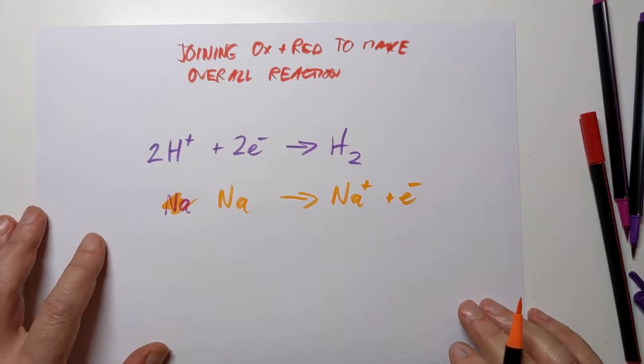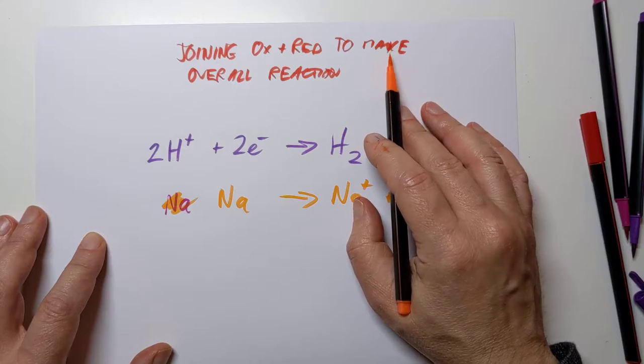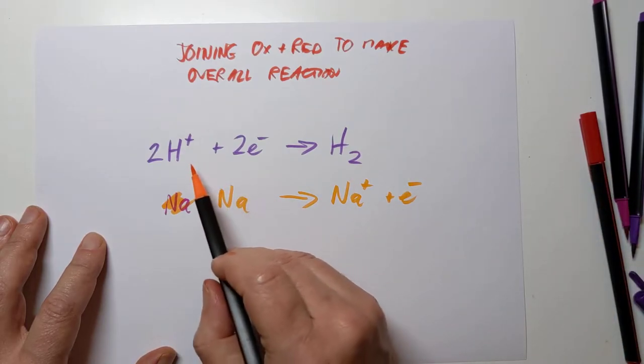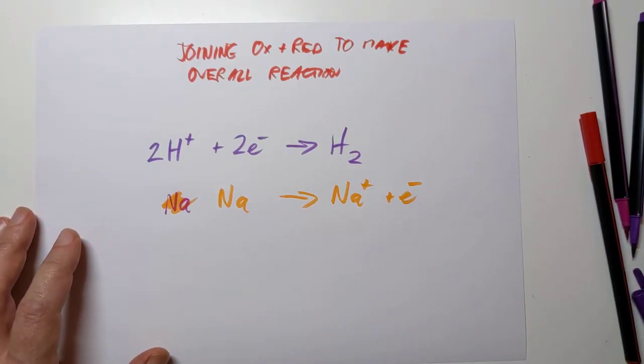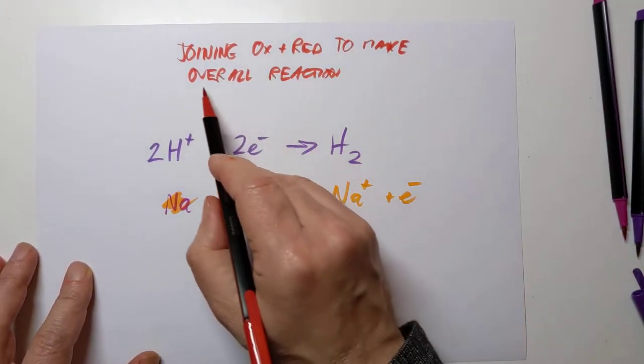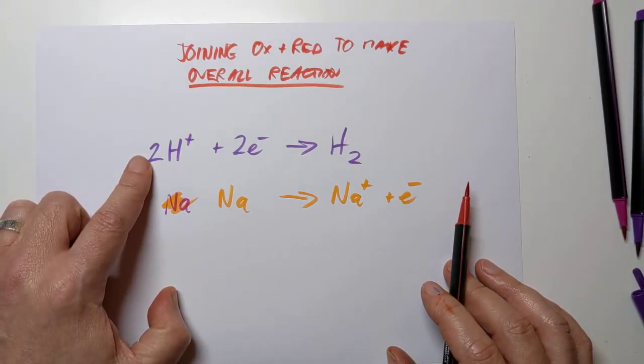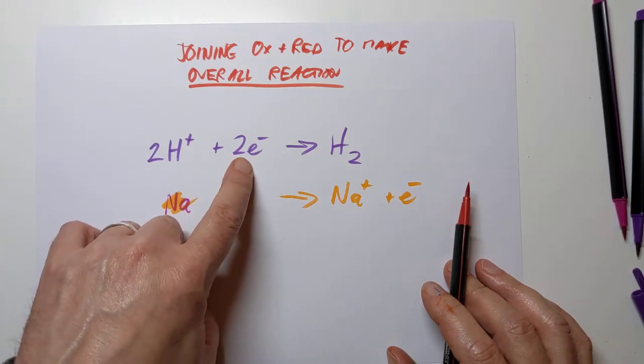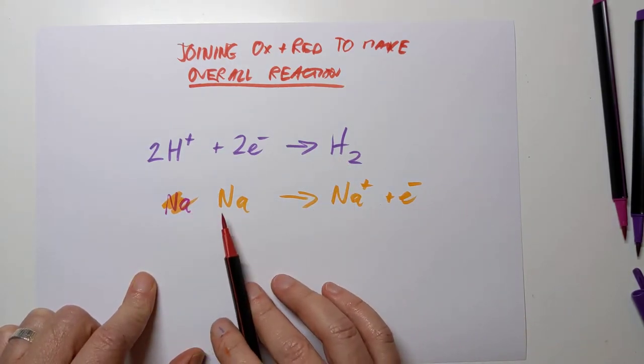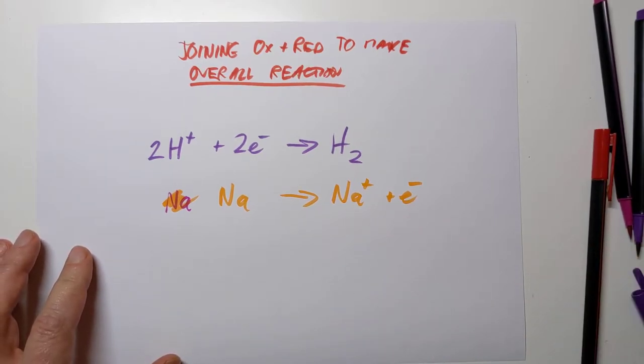Now, the SQA are very keen for you to be able to do this. They want you to be able to join an oxidation and a reduction. These are what's called half-reactions or ion-electron equations because they involve ions and electrons. And the SQA want you to know how to join these two together, squash them together, and form the overall reaction for this. So what's going on here? This is our reduction where the electrons are on the left of the arrow. We've got two H⁺ gaining a couple of electrons and forming hydrogen gas. And this is our oxidation. Sodium is losing a single electron here and forming sodium ions.